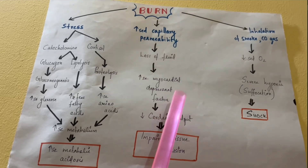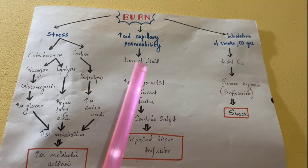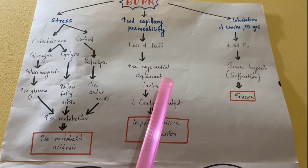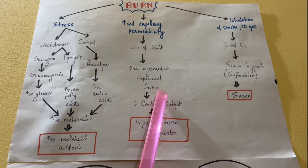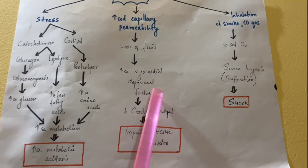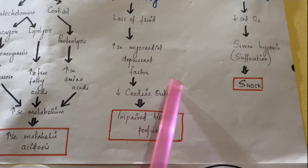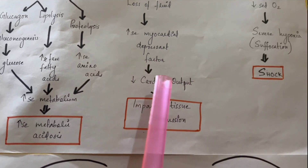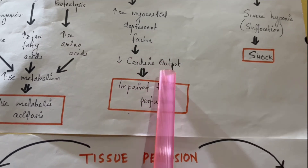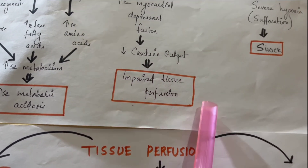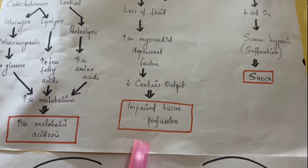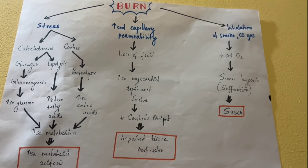Myocardial depressant factor acts on the myocardium — the heart muscle. This factor depresses cardiac function, leading to decreased cardiac output. With decreased cardiac output, there is reduced tissue perfusion throughout the body, which results in a drop in blood pressure — hypotension.